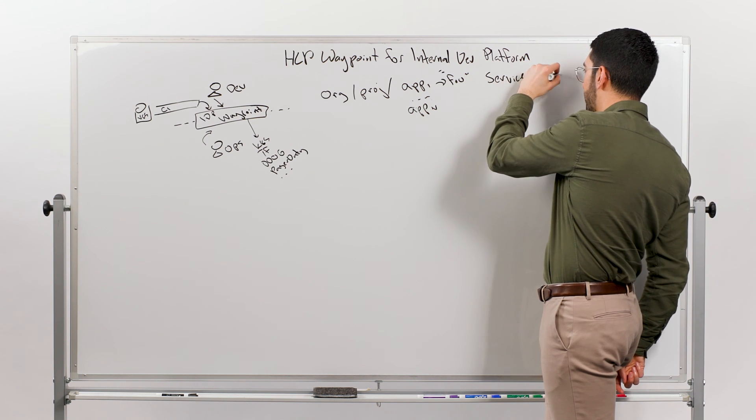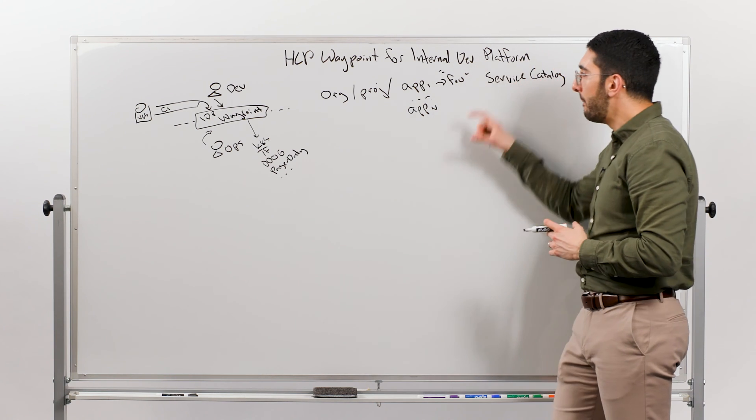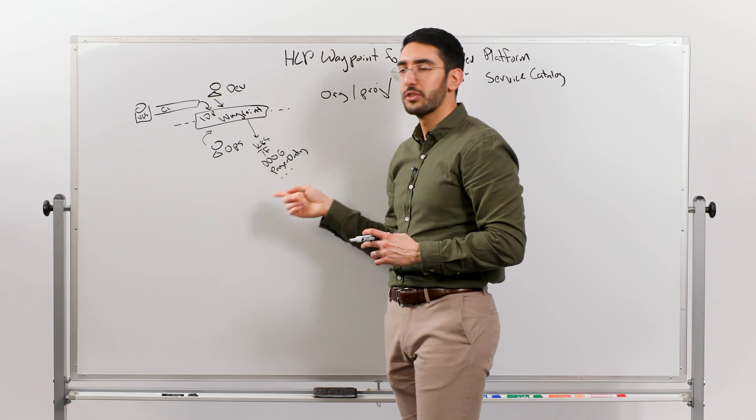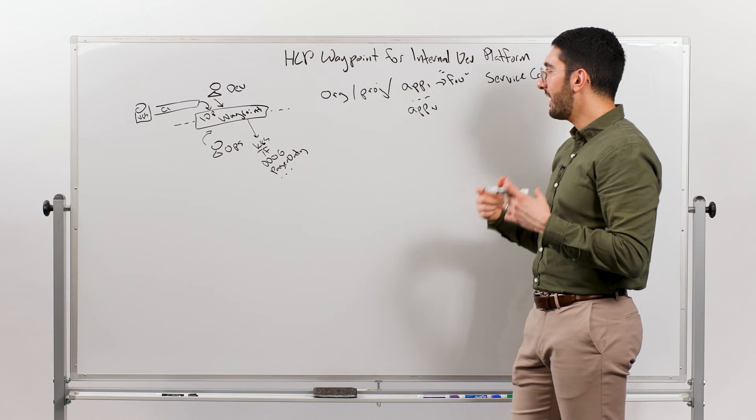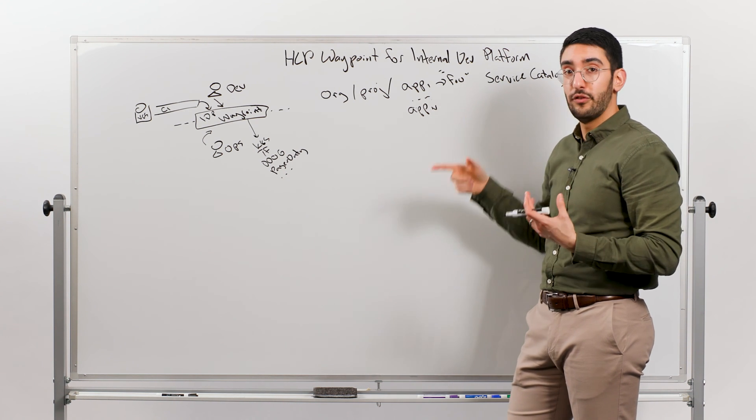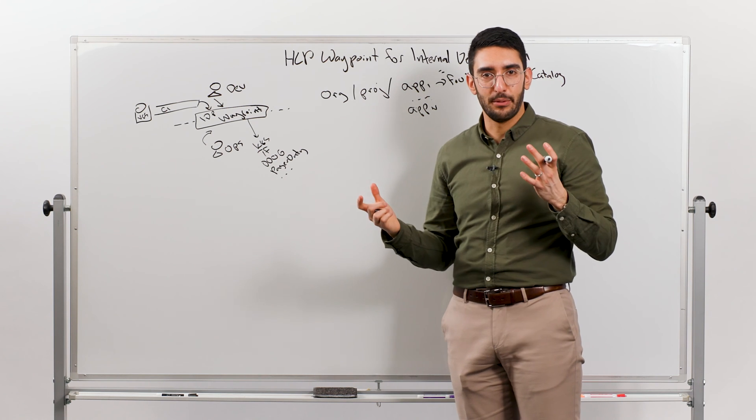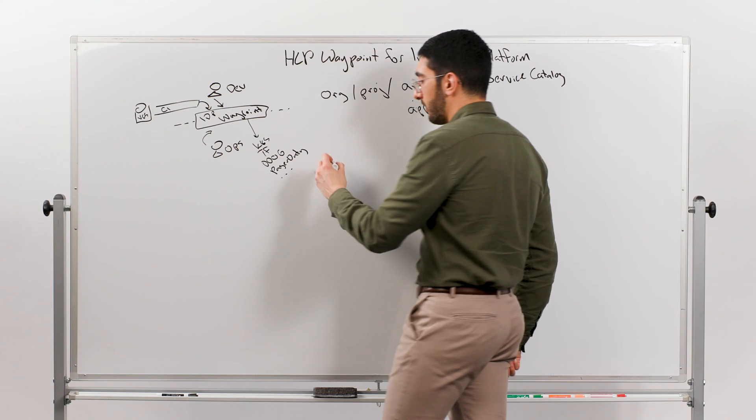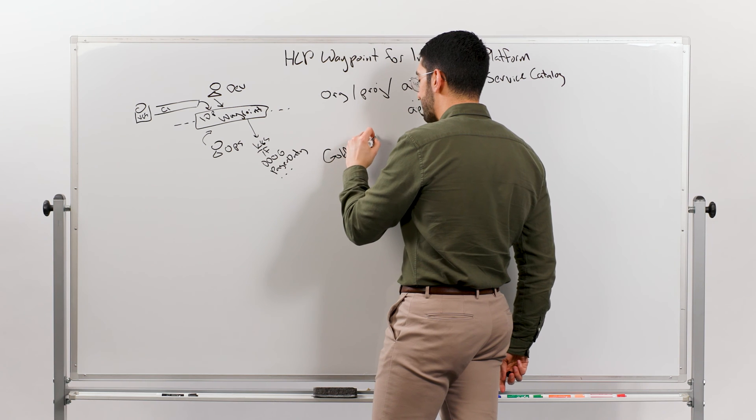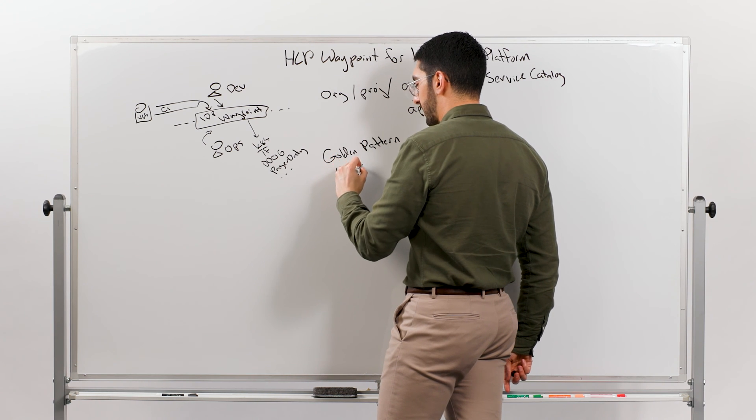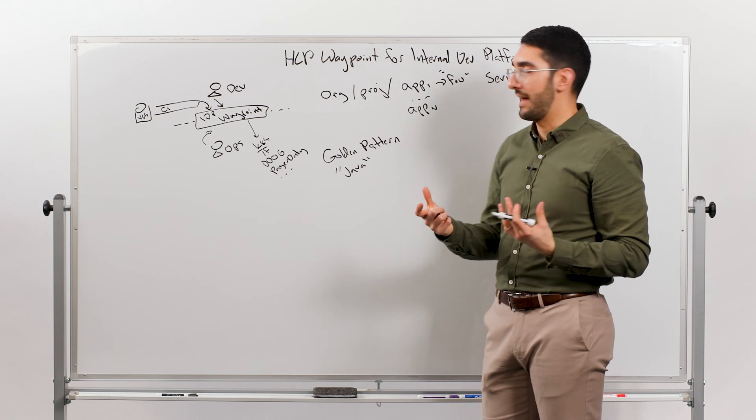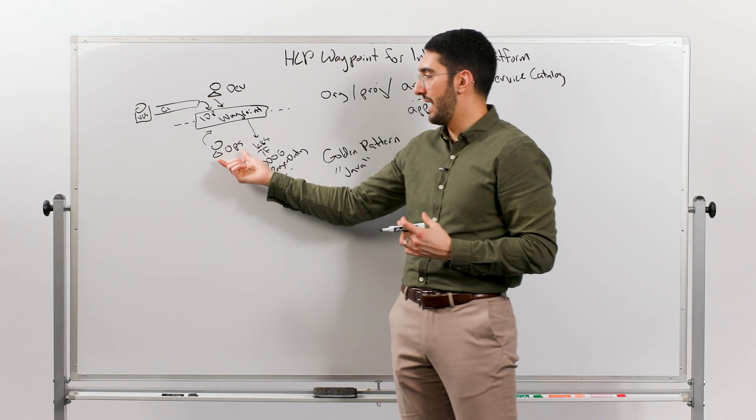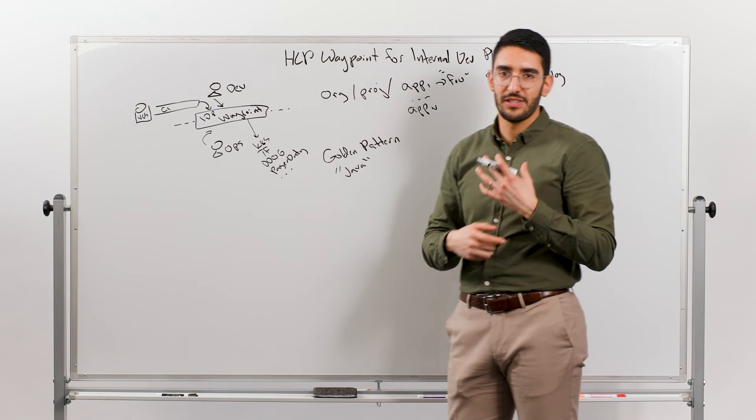It starts to get interesting where you say how do I connect that catalog into the operational rhythm of how these applications are actually built, deployed, and managed through their full lifecycle. I don't want every one of my Java applications to be a special snowflake that's defined differently, built differently, managed differently. Ideally, what I'd like to do is define a set of golden patterns. This gives me a consistency of management now for my operations teams.